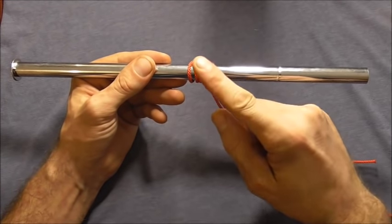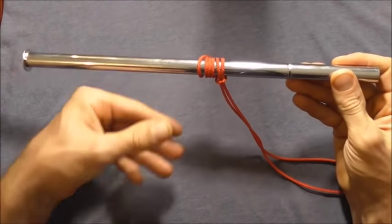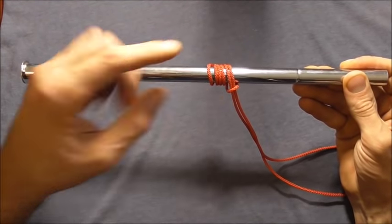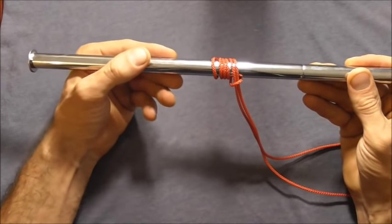Hi everyone, today we are going to have a look at the icicle hitch which is a slide and grip hitch that can be used for a lengthwise pull on a spar or a rail.